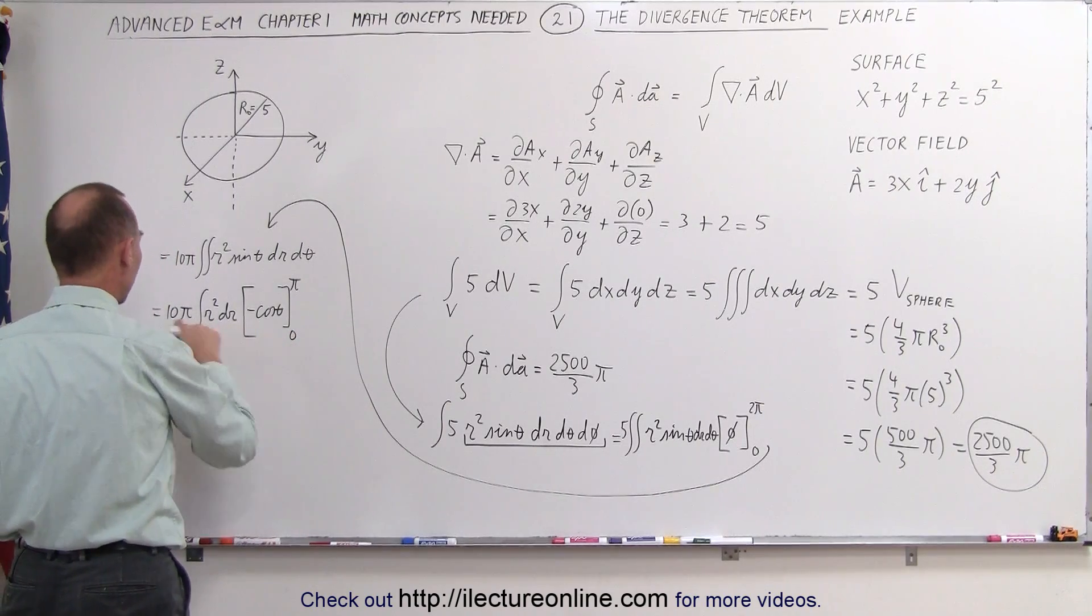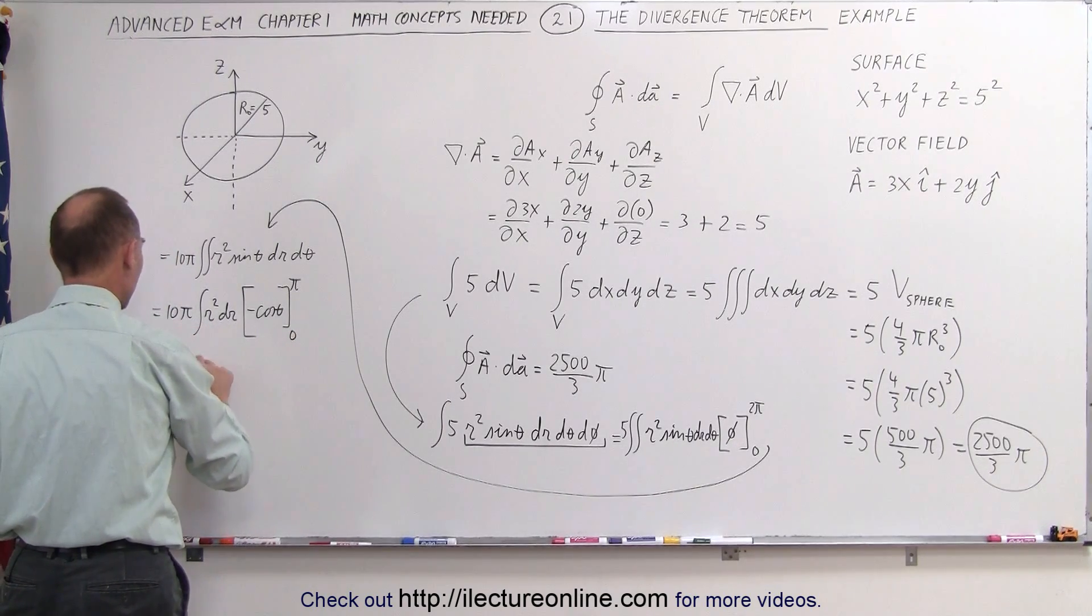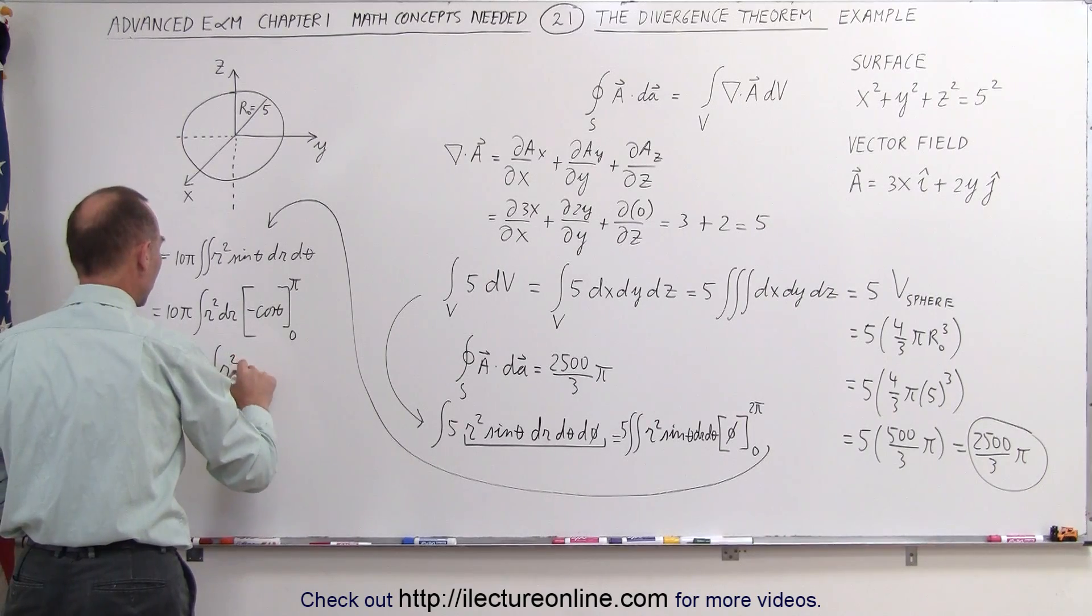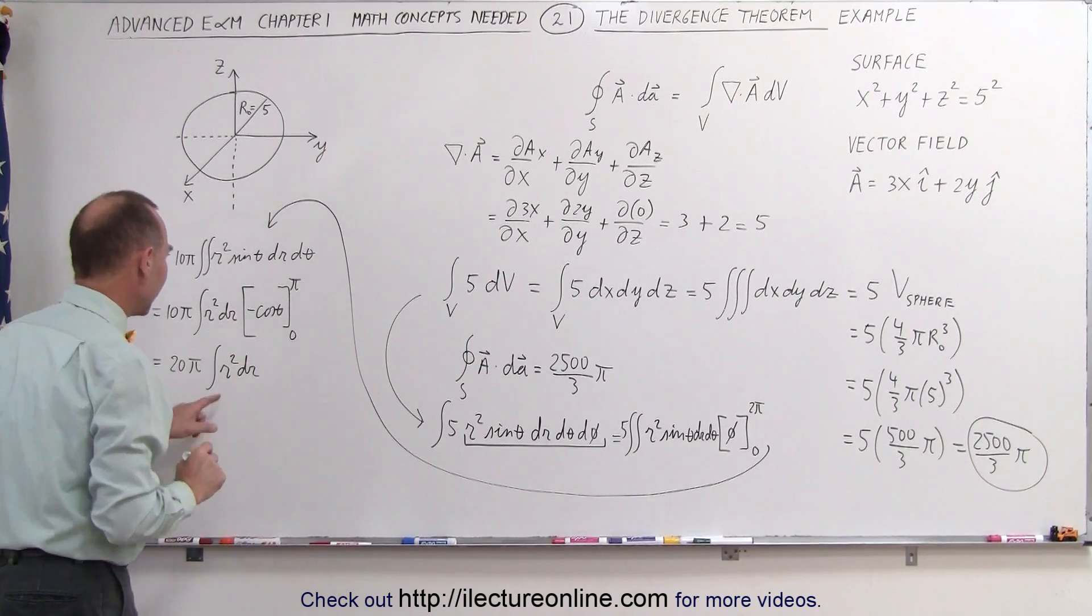In other words, this is equal to 2 times 10, or 20 pi times the integral of r squared dr.